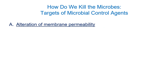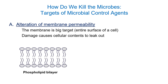So how do we kill these things? We're targeting biological molecules. Number one is alteration of membrane permeability. The membrane is on the surface of these organisms, unless it's a non-enveloped virus — non-enveloped viruses are harder to kill. Coronaviruses have envelopes, for example, and it's easier to kill them than norovirus, which doesn't have an envelope.